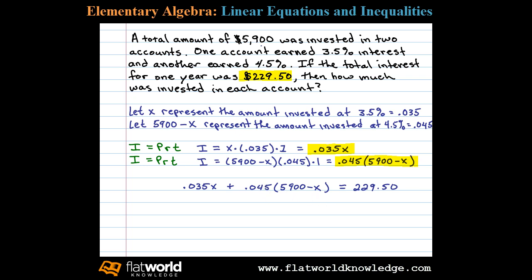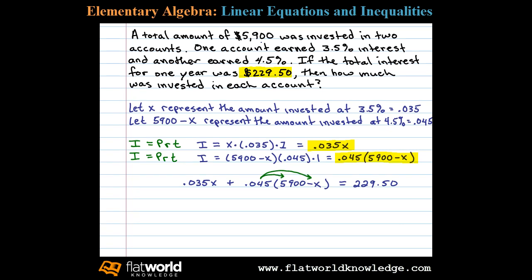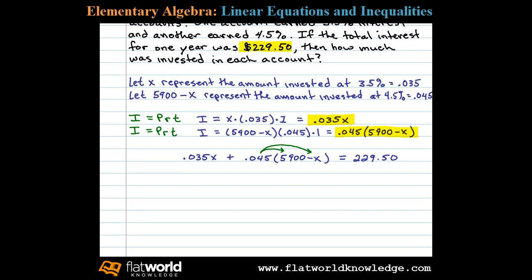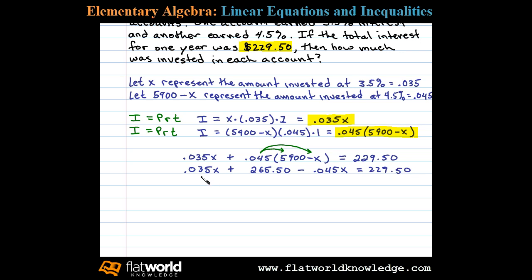The first step is to apply the distributive property — multiply both terms in the parentheses by 0.045. We have 0.035X plus 0.045 times five thousand nine hundred, which is 265.50, minus 0.045X, equals 229.50.